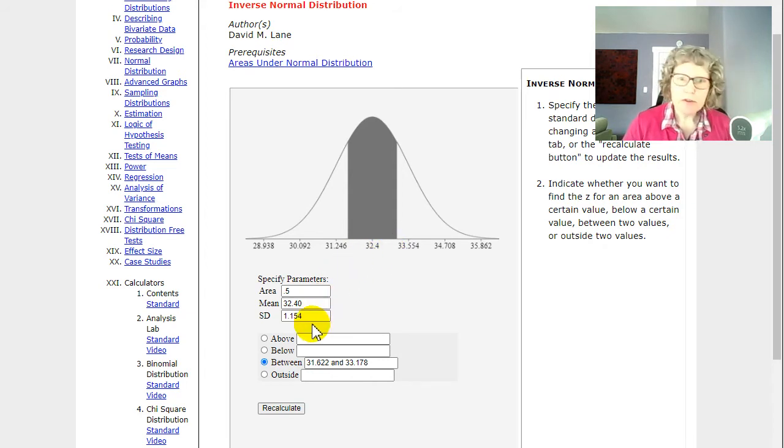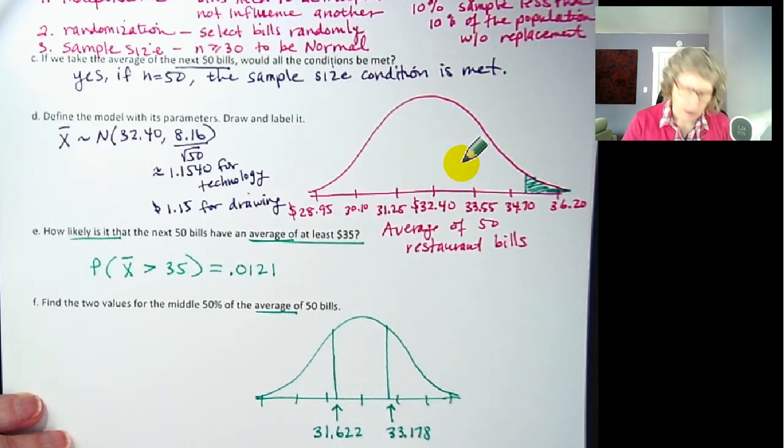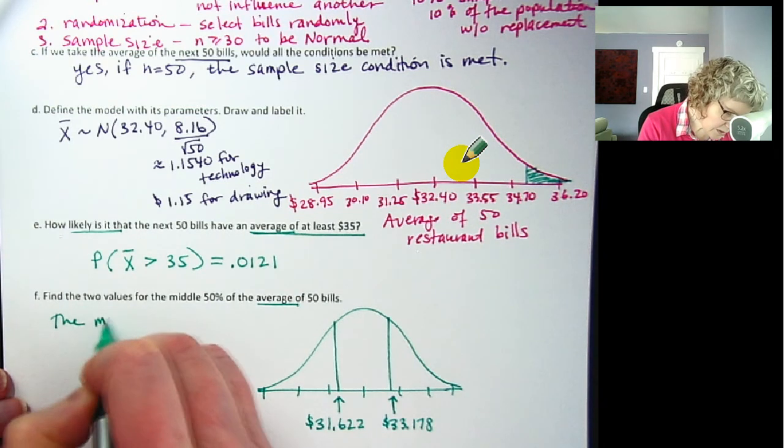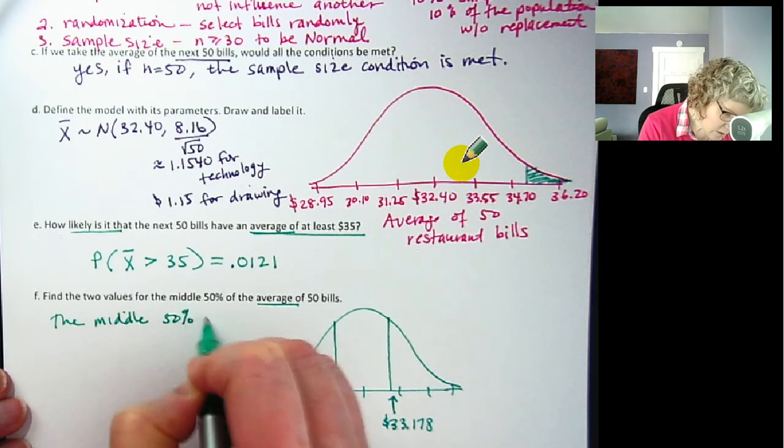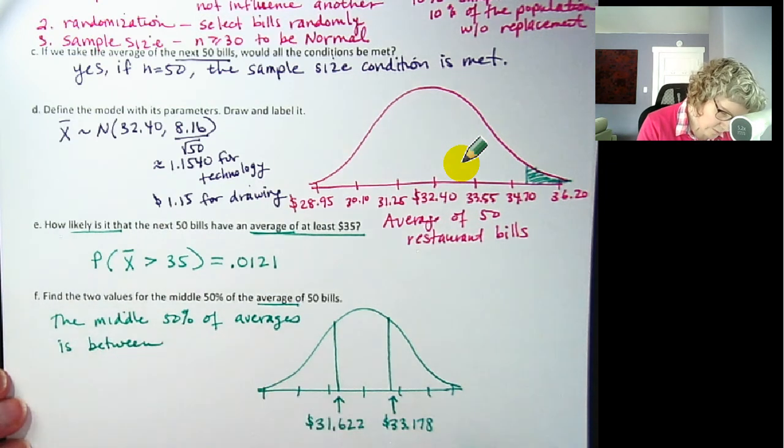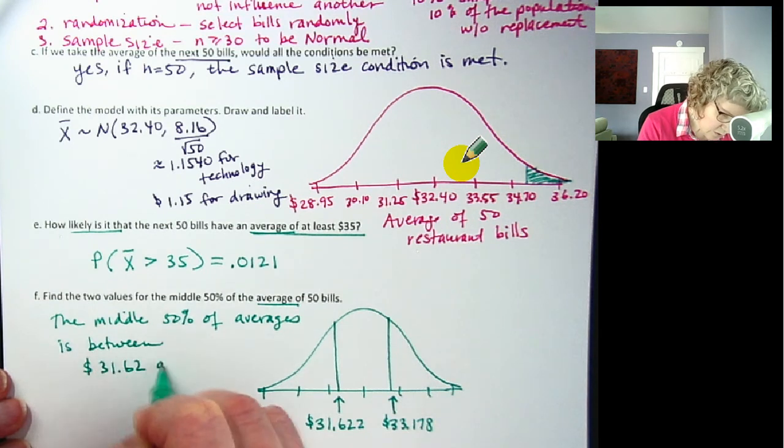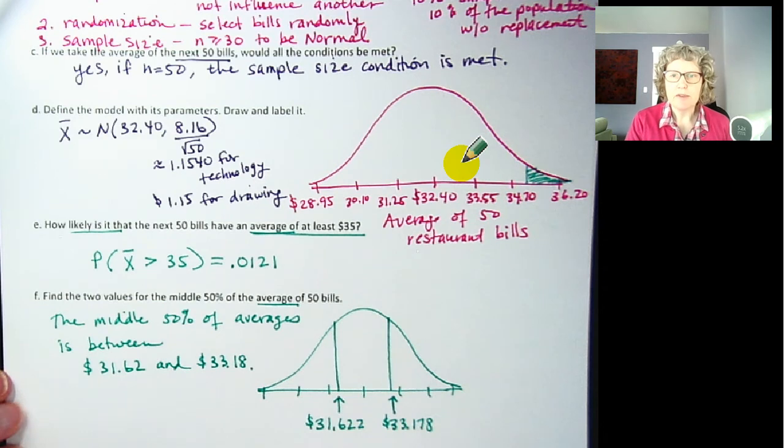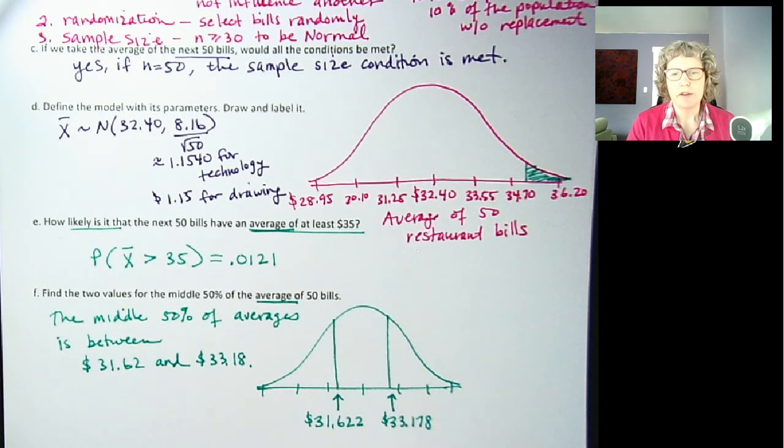Our mean is 32.40. Just double check. 1.154. Great. So let's write this down. So those are two values. And because this is money, I'm going to then round these to the cents. So the middle 50% of averages is between 31.62 and 33.18. So that's a question someone might want to know. Like if we just want to measure, you know, the middle 50% to be safe, what would those bills be between?